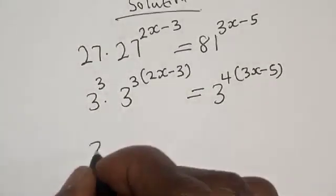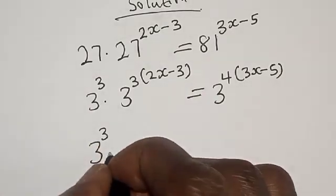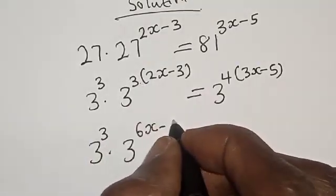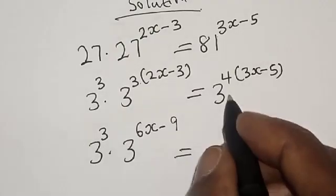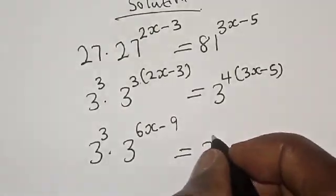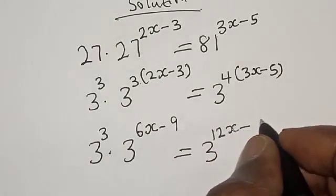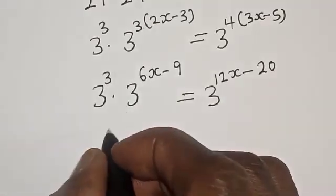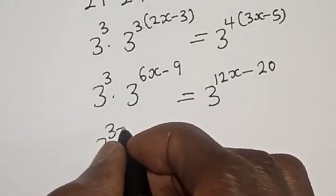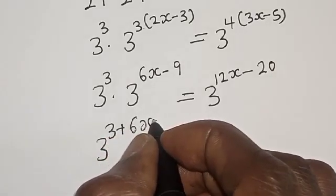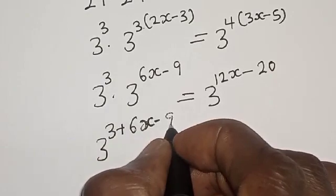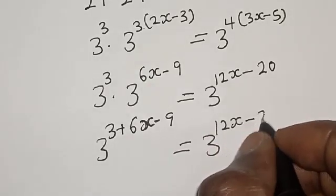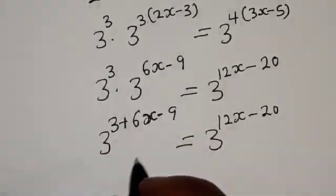Then we have 3 raised to power 3 multiplied by 3 raised to power 3 times 2x minus 3, which gives 3 raised to power 9, is equal to 3 raised to power 4 times 3, giving 12x minus 4 times 5, which is 20. Then we have 3 raised to power 3 plus 6x minus 9 is equal to 3 raised to power 12x minus 20.